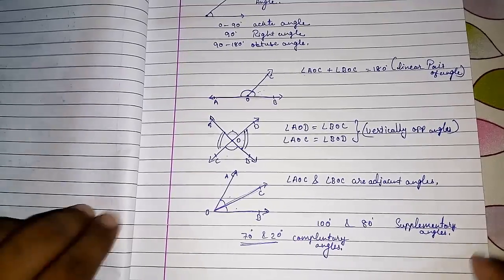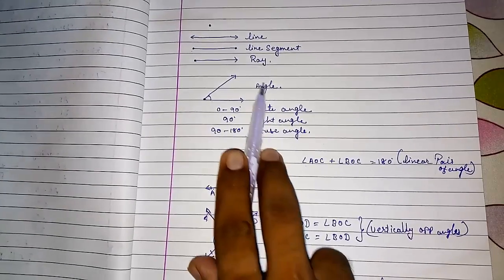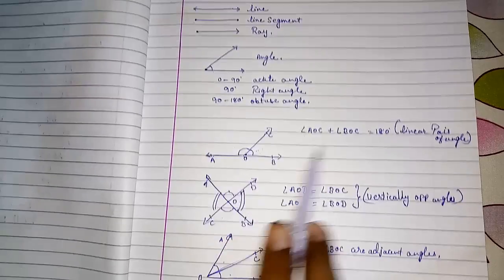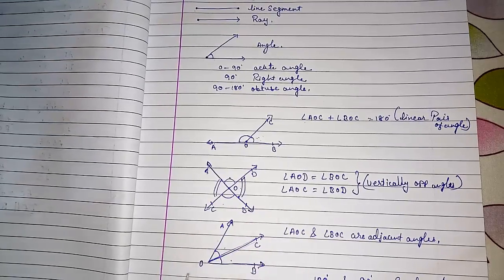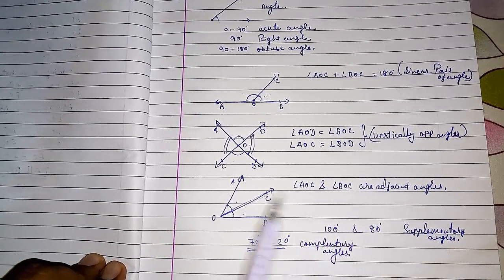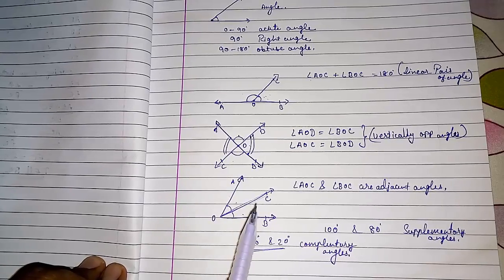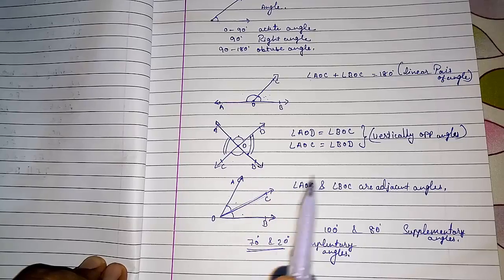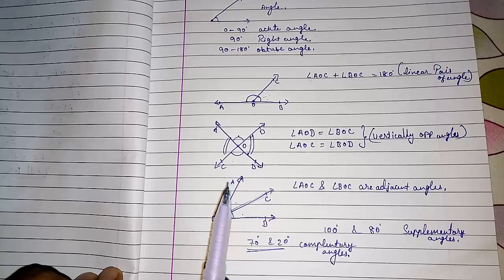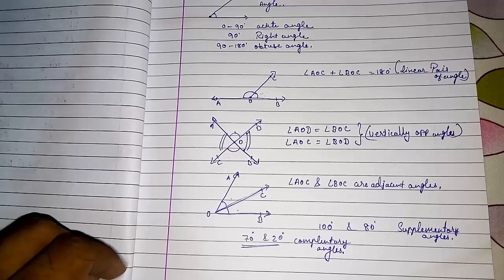So these are the basic things you should know: what is a point, a line, line segment, ray, angles, names of angles, linear pair of angles, vertically opposite angles, adjacent angles, and complementary and supplementary angles. In my next video I will explain parallel lines and transversals, which is a bit more difficult. Thank you so much for watching — if you like it, please subscribe to my channel.